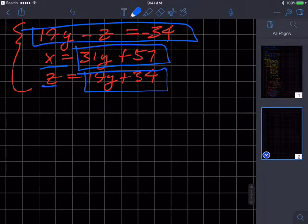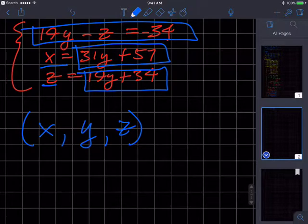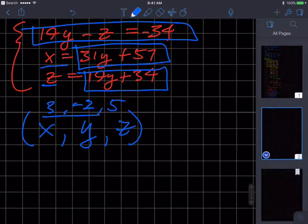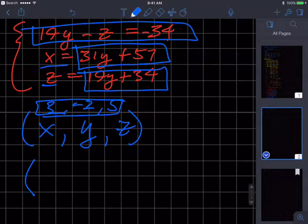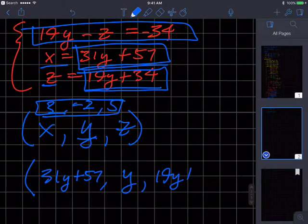So my solution is going to be some x comma y comma z. But because it's a dependent system, I can't put like 3, negative 2, 5. I cannot put a single set of answers because there's an infinite number of solutions I would be writing here forever. So what I need to do is write down, for instance, and I chose the exact same way, but you could have chosen a different way, but it was just easier with this problem. I'm going to write x in terms of y. So I get 31y plus 57 comma. And my y value is simply y comma. And my z value is in terms of y. 19y plus 34.